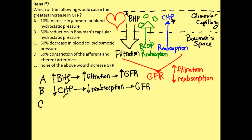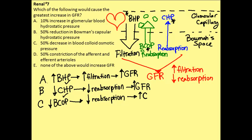Let's go on to C. Here, we've decreased our blood colloid osmotic pressure. We saw that the blood colloid osmotic pressure promotes reabsorption. So if we decrease the blood colloid osmotic pressure, we would decrease our reabsorption, which could also increase our GFR. So this is also a potential answer — we haven't been able to eliminate much yet.